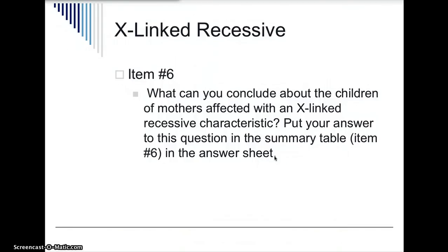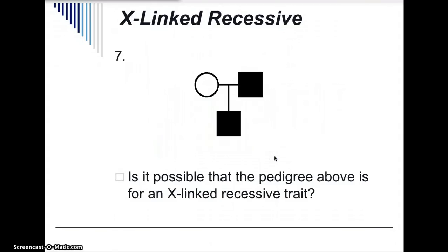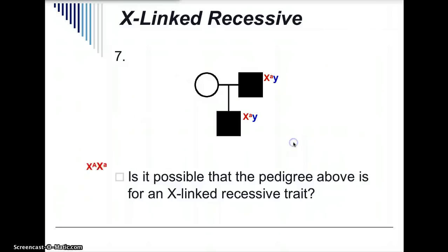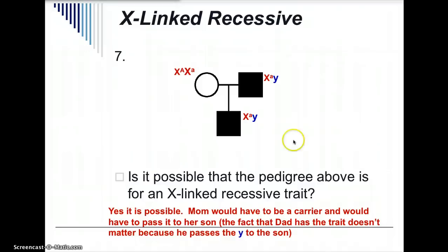The children of mothers with an X-linked recessive characteristic: boys are likely going to get the characteristic, and girls are less likely, especially if the father does not also have the characteristic. Is it possible that this is for an X-linked recessive trait? The mom has at least one dominant allele, the dad has a recessive allele and a Y chromosome, and the son has a recessive allele and a Y chromosome. We don't know the other allele — it could potentially be recessive on that other X chromosome. So yes, it is possible that the mom passed that trait down to the son. The fact that the dad has the trait doesn't matter here because he does not pass it on to the son.